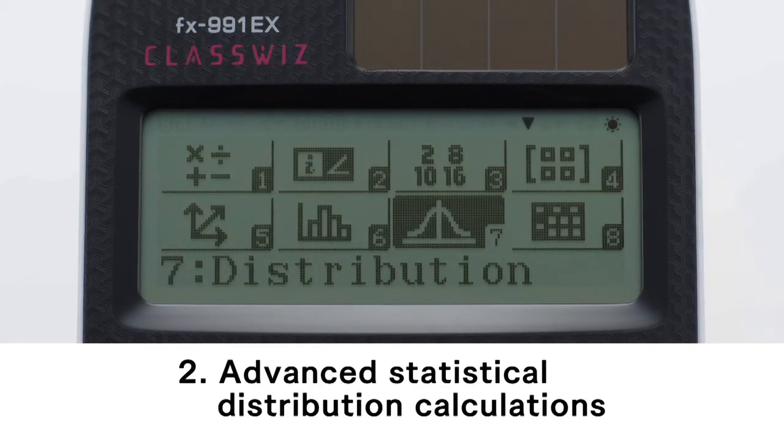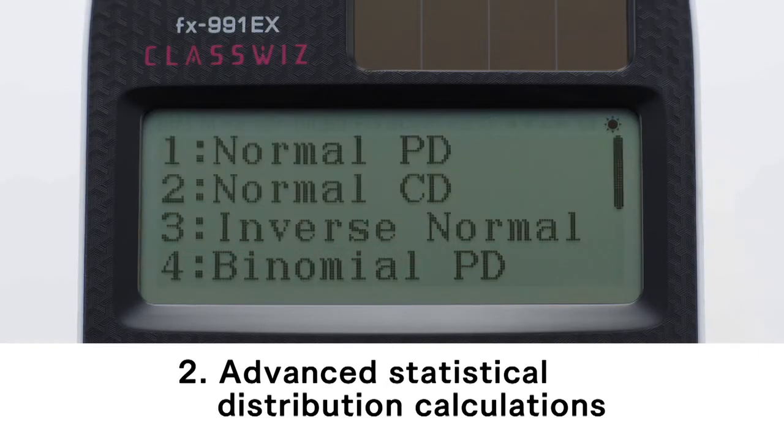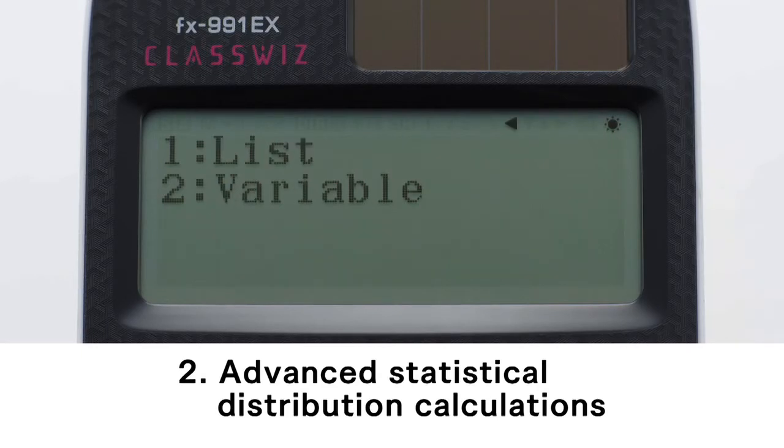Advanced statistical distribution calculations. First, select a distribution calculation type. Press 3. Next, select an input method for X.